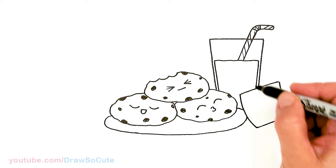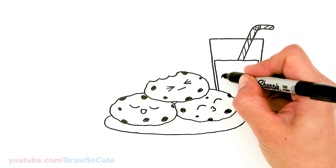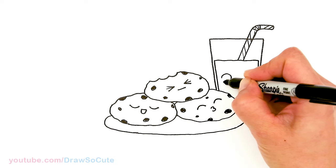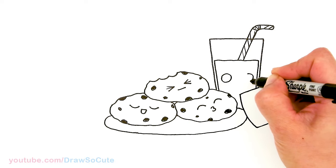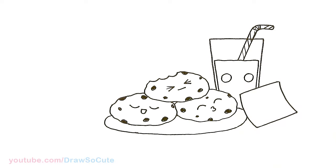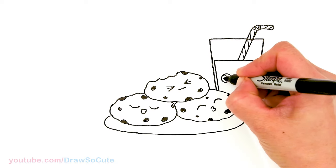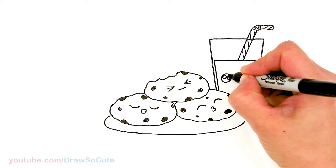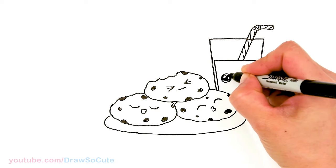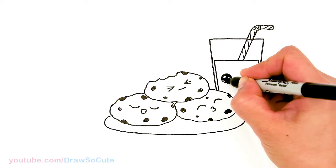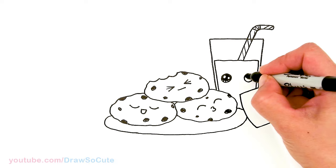Okay there. And then now let's bring our milk to life. So I'm going to come here and draw two eyes, so just two circles. And we're going to make them draw so cute eyes. So come in here with two smaller circles and a curved line at the bottom and shade in the top. And the lines at the bottom.